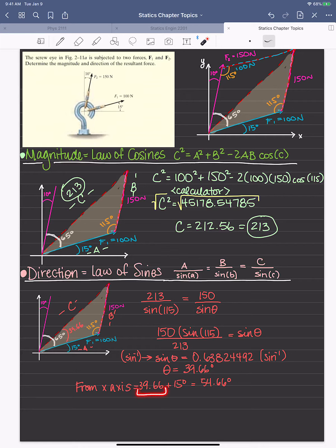And of course, that's going to be from the x-axis. So we have to account for this additional 15 degrees. So we have 39.66 plus 15, so that's 54.66 degrees. And that's going to be the direction angle. And this will be the magnitude of the resultant force.